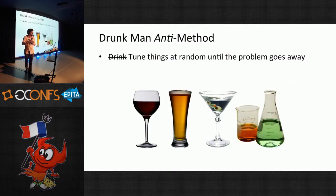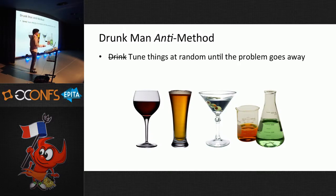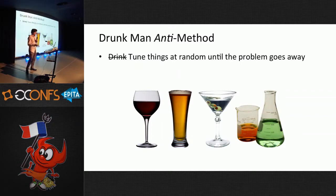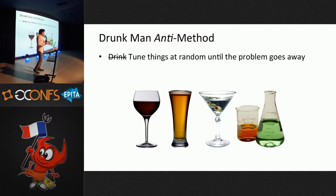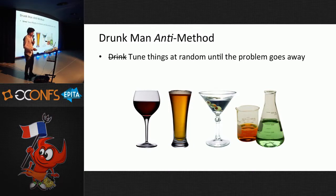The drunk man anti-method is an experimental anti-methodology where you tune things at random until the problem goes away. I once came to work and the application's configuration had been changed a lot. I was told, 'Brendan, we had to change the config — it was performing badly in the middle of the night, we didn't wake you up. We used the drunk man anti-method.' That was actually useful because immediately I understood why they picked the crazy tunables they picked — they just guessed. Then I could debug it myself.